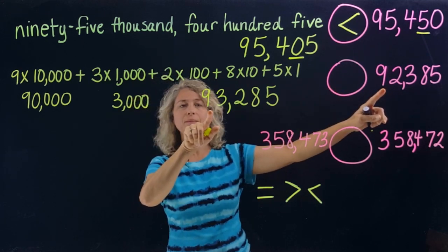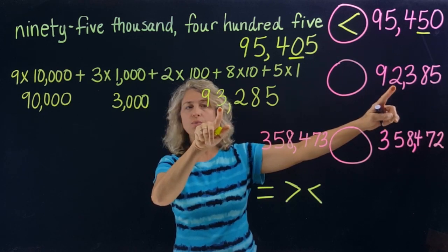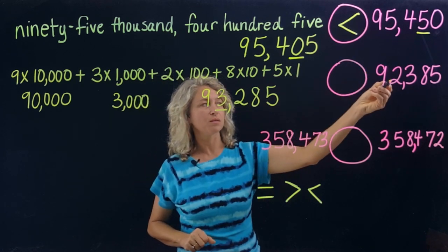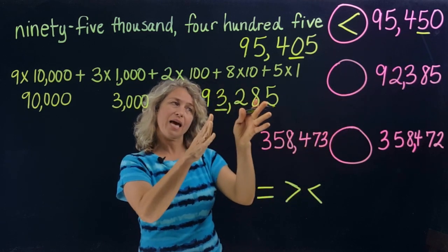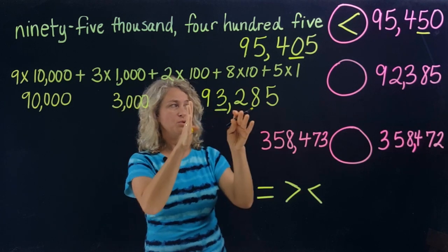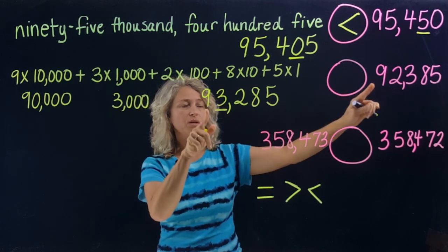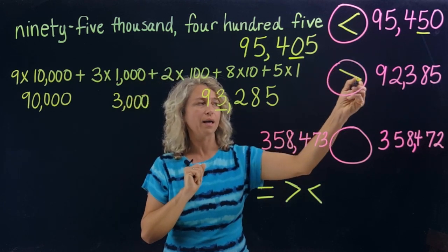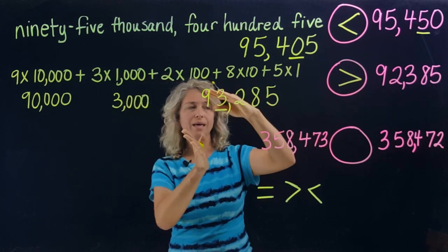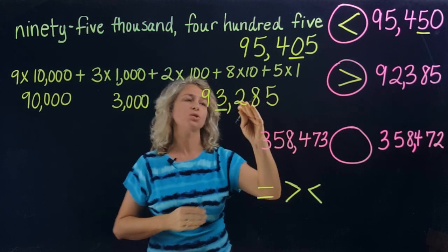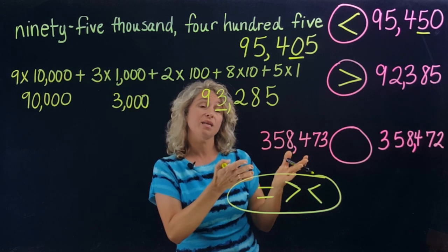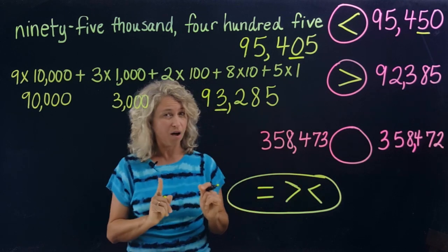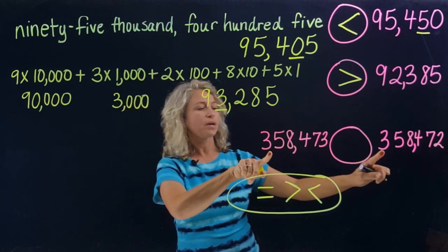Let's start at the greatest value. Nine is the same — move to the next one. Three and two: which one's larger? Three. So ninety-three thousand versus ninety-two thousand — the numbers sound a lot alike, and that's how problems will be. Numbers that are slightly mixed up. But you start at the greatest value: ninety-three thousand is larger. So the symbol is going to eat the big number, which is ninety-three thousand two hundred eighty-five.